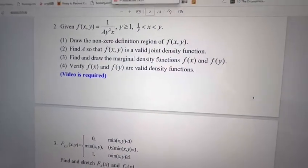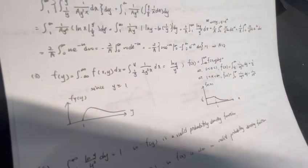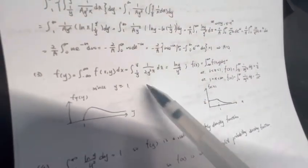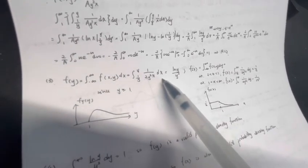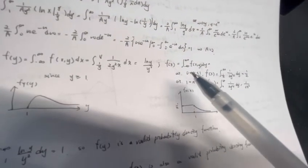The third question asks us to find and draw the marginal density functions fx and fy. We use the value a equals 2 and substitute it into the function the question offers. So a equals 2, and fy equals this expression, which calculates to ln(y) divided by y squared. Since y is larger than or equal to 1, the graph starts from 1 and decreases like this.